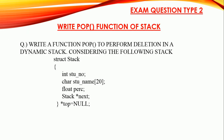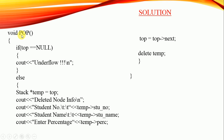Exam question type 2 will be to write the pop operation or pop function of stack: write a function pop to perform deletion in a dynamic stack using the same stack structure. While writing the pop function, first we have to check for underflow. If top equals null, it means there are no elements in the stack, so an underflow message will be displayed.